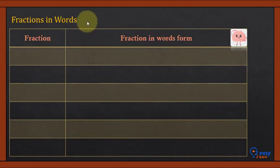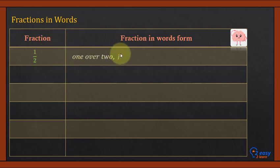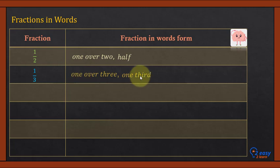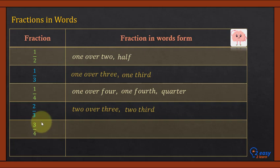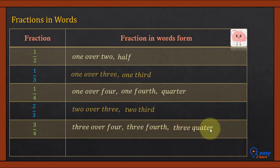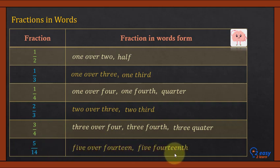Let's see how fractions are written in words. One over two — we call it 'half'. One over three — we read it 'one third'. One over four — we read it 'one fourth' or 'quarter'. Two over three is called 'two thirds'. Three over four is called 'three fourths' or 'three quarters'. Five over fourteen — we read it 'five fourteenth'.